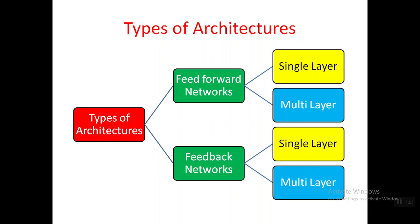In feed forward networks, information flows from input to output. In feedback networks, the same thing happens but the output is again given as input — sometimes there is no input at all and the output simply feeds back as input to other neurons. In both feed forward and feedback networks, there are two subtypes: single layer and multi-layer networks.